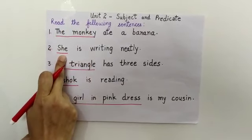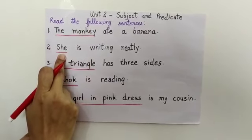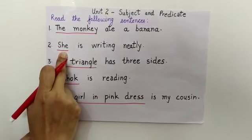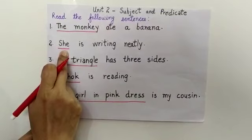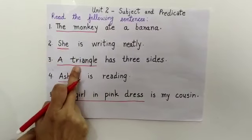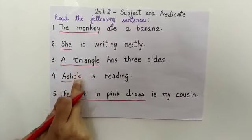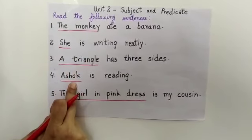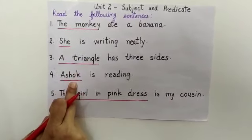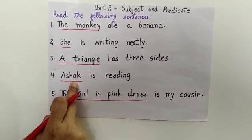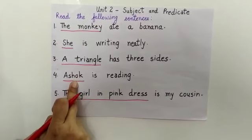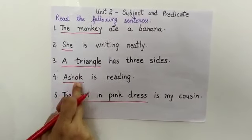In the second sentence, she is the subject of the sentence. In the next, a triangle. And in the fourth sentence, we are talking about Ashok. So, Ashok is the subject.